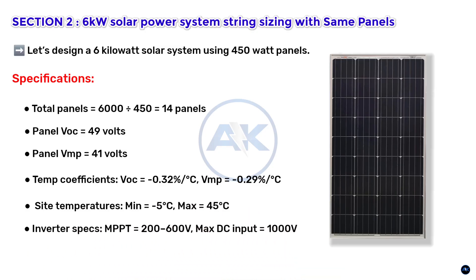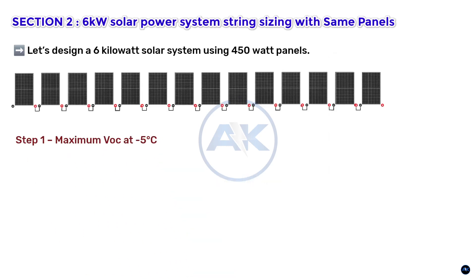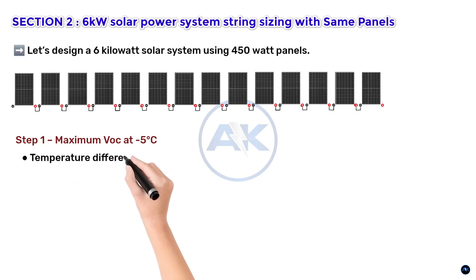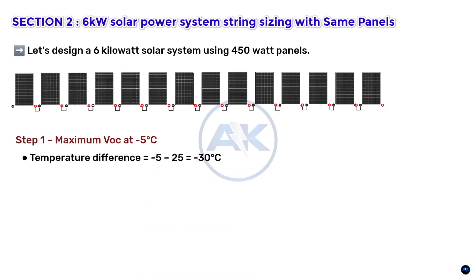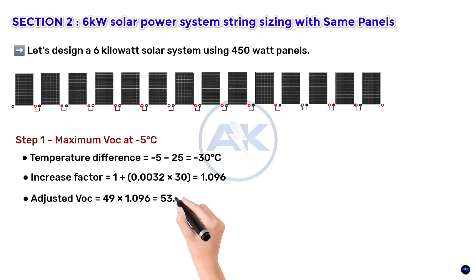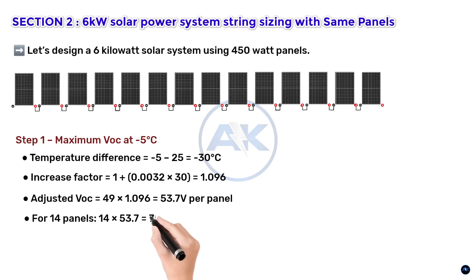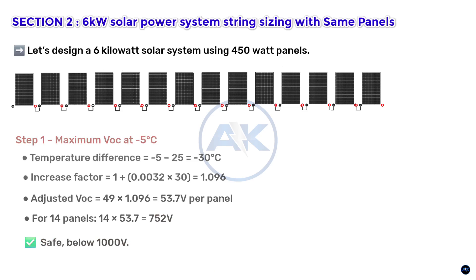Step 1 — VOC at −5°C. Temperature difference = −30°C from STC. Increase factor = 1 + (0.0032 × 30) = 1.096. Adjusted VOC = 49 × 1.096 = 53.7 V per panel. For 14 panels: 14 × 53.7 = 752 V. This is safe — under the 1000 V inverter limit.